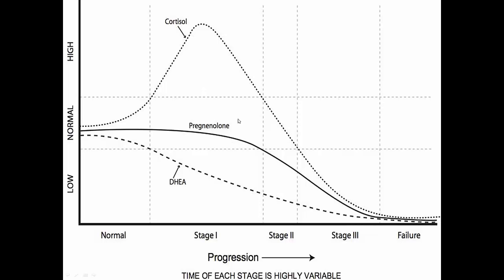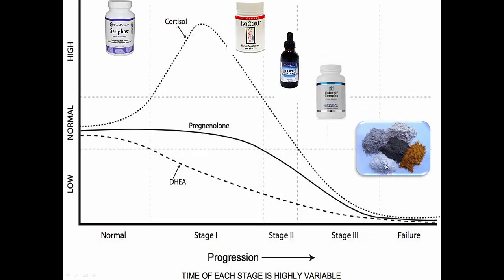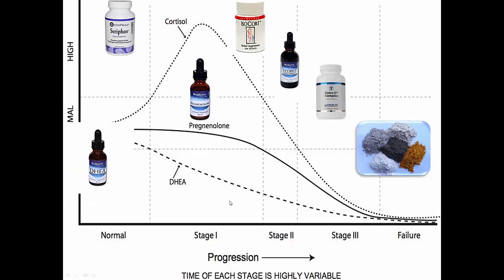There are a few things we can do. We can use phosphorylated compounds such as phosphatidylserine to help with high cortisol levels. We can use glandulars, cortisol support products, or licorice to support cortisol levels, and vitamin C. We can use various adaptogenic herbs — whether it's Eleuthero, ginseng, ashwagandha, rhodiola, or holy basil — all adaptogenic herbs that can help with HPA axis communication. We can use pregnenolone and DHEA as well.